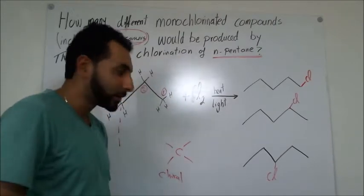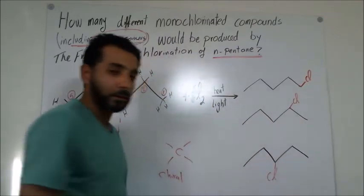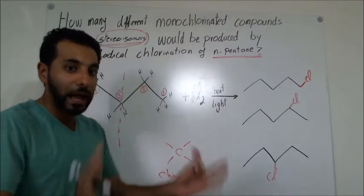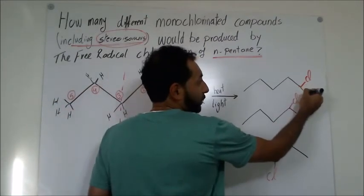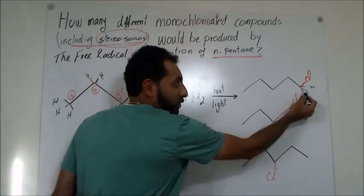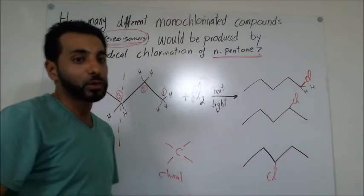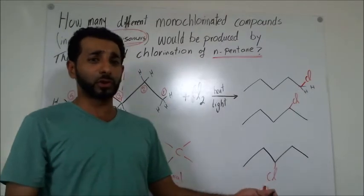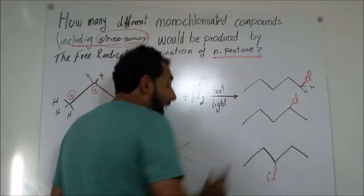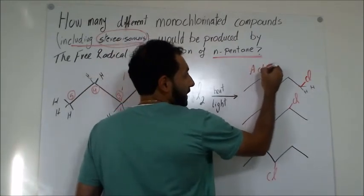Looking at product 1: if I draw all the hydrogens on the carbon bearing the chlorine, the four groups around it are hydrogen, hydrogen, chlorine, and a four-carbon butyl chain. Since there are two identical hydrogens, this is not a chiral center — so there are no stereoisomers for product 1. It is achiral.